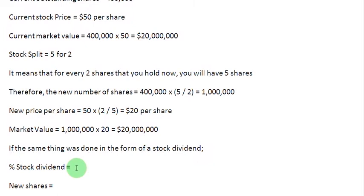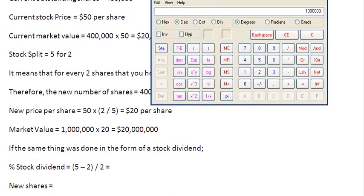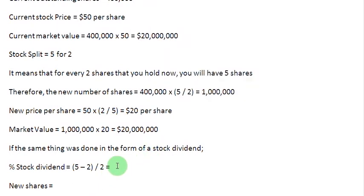Just like we find out our return, we can find out the percentage stock dividend — that is the difference between the new and the old. So we write 5 minus 2, put this in brackets, and divide by the old number of shares, which is 2. That gives us 5 minus 2 equals 3, and 3 divided by 2 is 1.5. So 1.5, or simply 150%, is the stock dividend in this case.